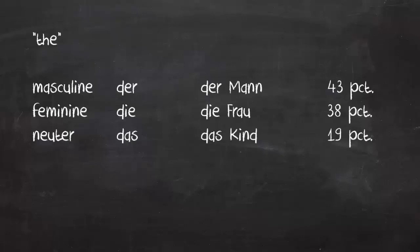And the neuter definite article is 'das' — for example, 'das Kind,' meaning 'the child.' 19% of all German nouns are neuter.